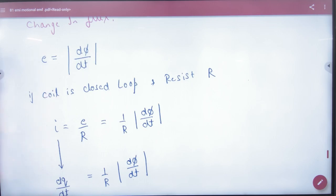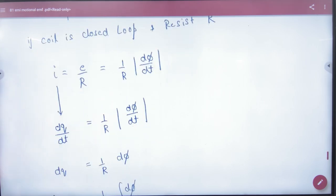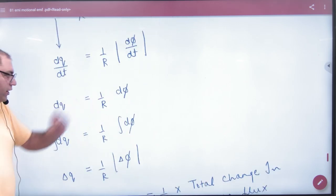So emf is dφ by dt. Current is emf by resistance. Current is 1 by R into emf. Current is dq by dt. Dt has been cancelled from dt. So we have dq value in terms of dφ.